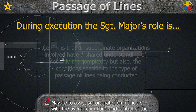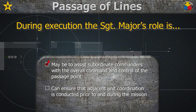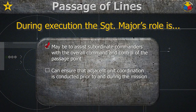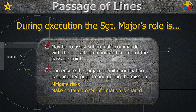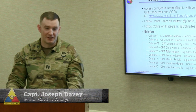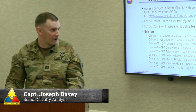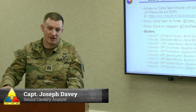During execution, the Sergeant Major's role may be to assist subordinate commanders with the overall command and control of the passage point. When empowered by the commander, the Sergeant Major can ensure that adjacent unit coordination is conducted prior to and during the mission. This will help mitigate risk, make certain that proper information is shared, and ensure mission accomplishment. Thank you for viewing our Tactical Talk focusing on passage of lines.